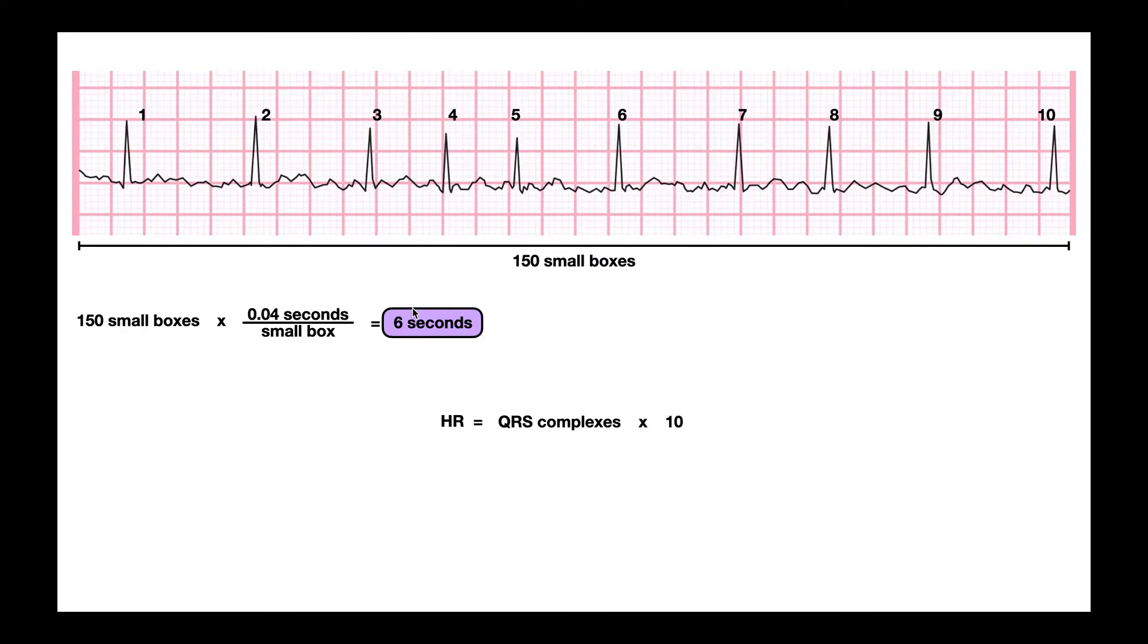The rule is my average heart rate over the course of this 6 seconds is given by the number of QRS complexes times 10, always times 10. So I have 10 QRS complexes, I multiply that by 10. So my average heart rate over this EKG strip is 100 beats per minute.